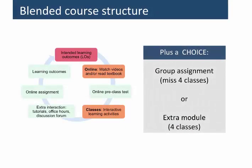The blended course structure is very similar — essentially the flipped class structure plus a choice. Toward the end of the course, students can either complete a group assignment where they would not attend four classes, or they can attend those four classes and complete an extra module. Students make that choice individually, and in the past approximately 65% have chosen to do the group assignment.